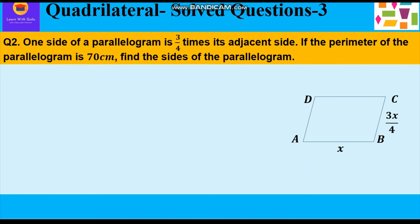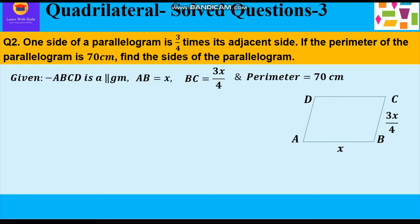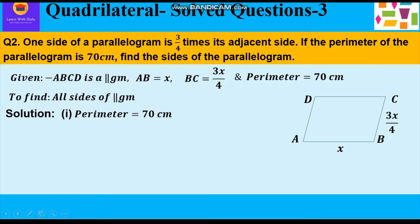So given to us: ABCD is a parallelogram where AB = x, and the adjacent side BC is 3/4 of x, because one side is 3/4 times the adjacent side. So if AB = x, then BC = 3x/4. Perimeter is 70 cm and we have to find all the sides of the parallelogram. Now let's start with the solution. We know the perimeter of a parallelogram is 2(length + breadth), so 2(length + breadth) = 70. Let length be AB and breadth be BC.